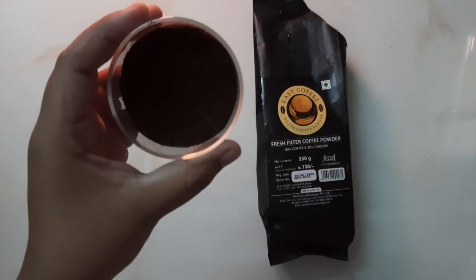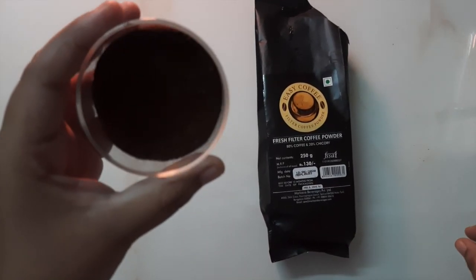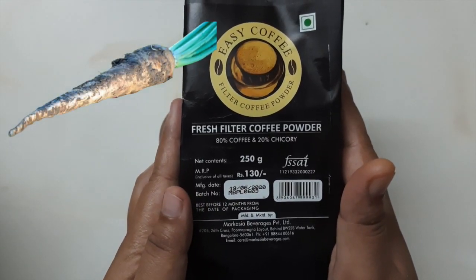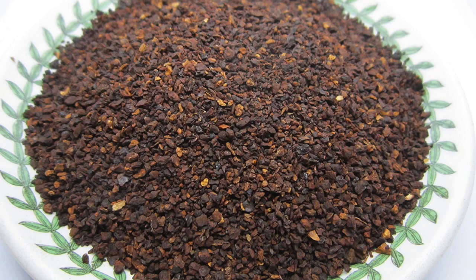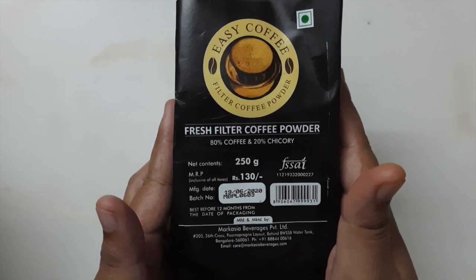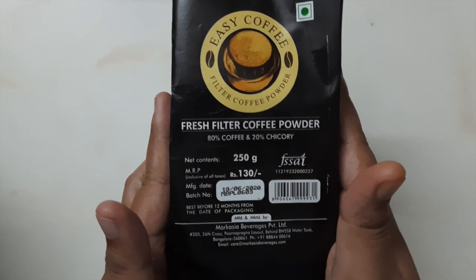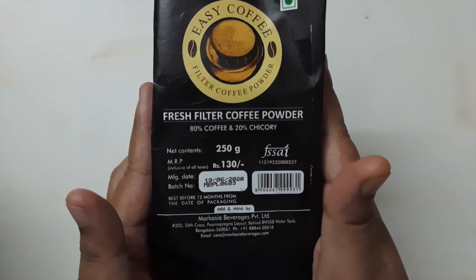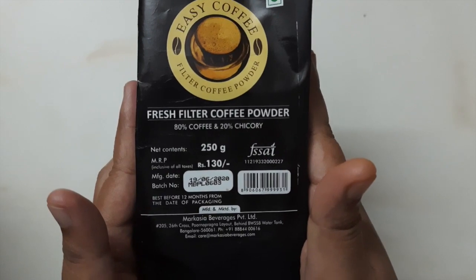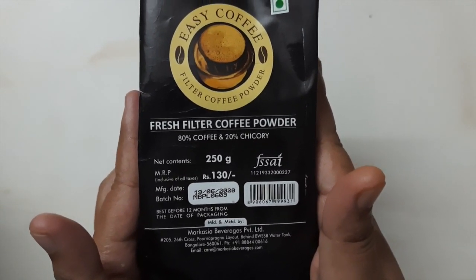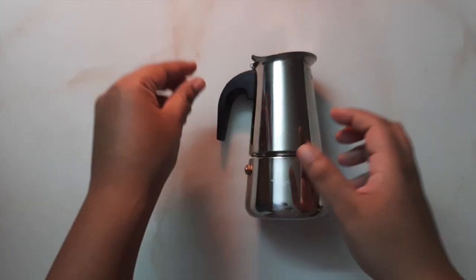So let's get through the process. The coffee you're seeing here has 80% coffee and 20% chicory. Chicory is a root plant that is dried in the sun, roasted, and then ground. It tastes very similar to coffee, and in many countries chicory is used as a substitute to coffee. The coffee I'm using currently also has chicory.